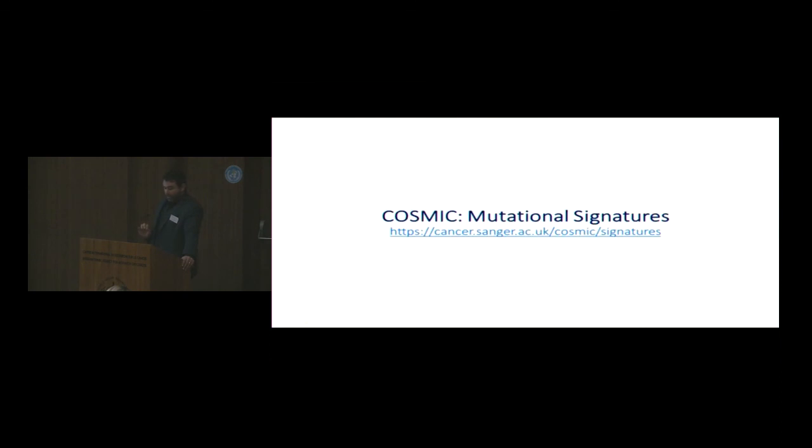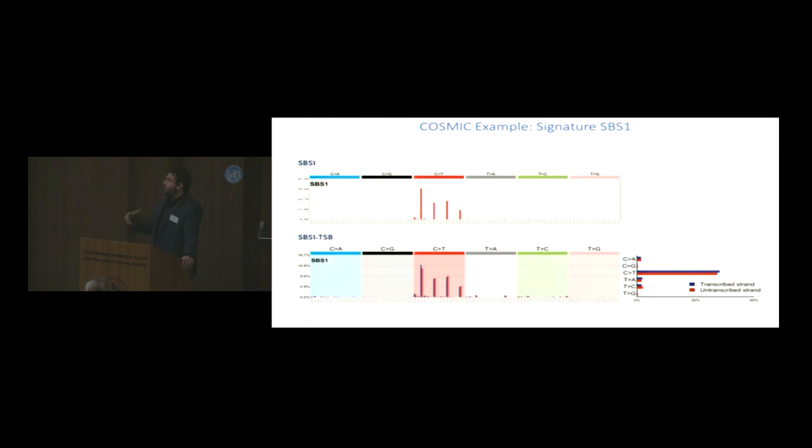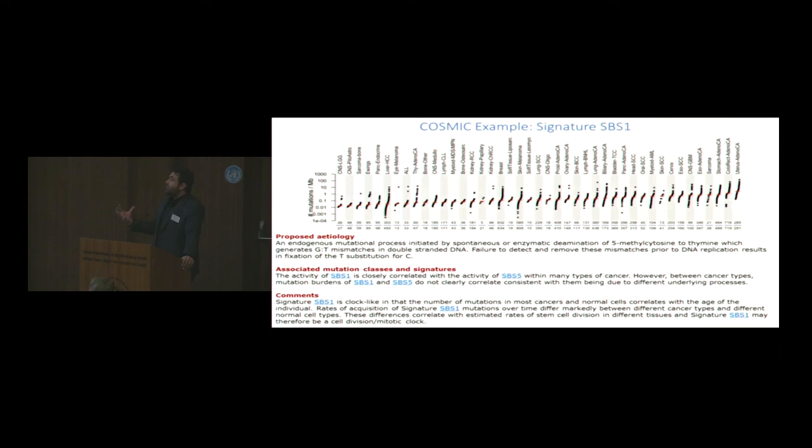Last, very briefly, because I am out of time very much, I wanted to tell you all of these signatures, all of what we have done, has been released on the COSMIC website. We have provided a lot of information about these signatures, their plots, their numerical data, but also their presence in human cancer, and very detailed and curated information about what we know, their etiology, their mutation classes, and comments of what we have observed and what we have learned.